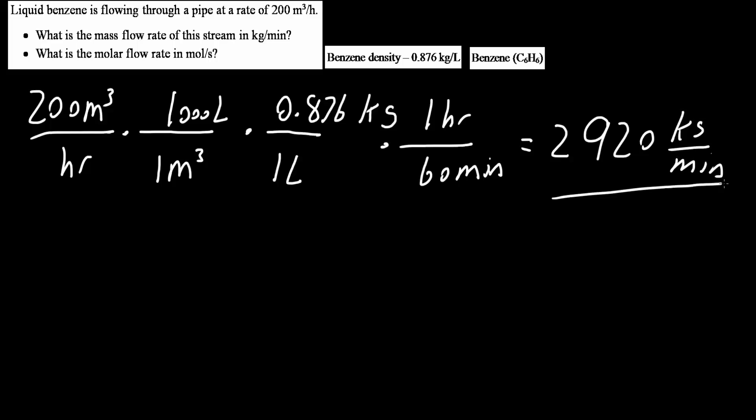So this right here is the first answer. And now we will do the molar flow rate. Likewise, we will take this number, 2920 kilograms per minute. Now in this problem, to get the molar flow rate, we need to convert mass into moles.